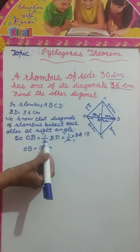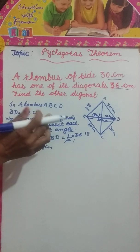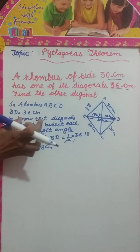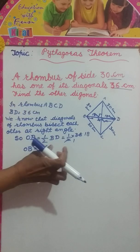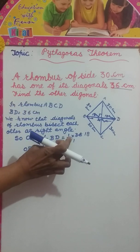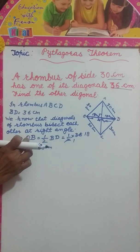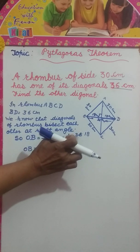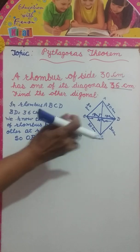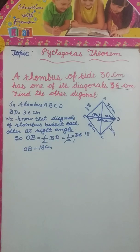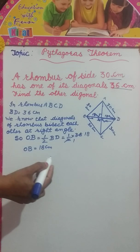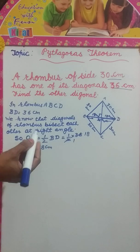OB will be equal to half of BD. If BD is 36 cm, then OB will be half of it, that is 18 cm. So OB is equal to 18 cm.